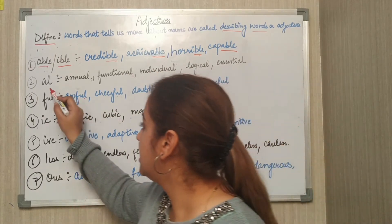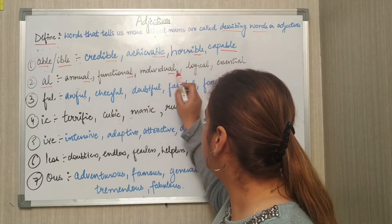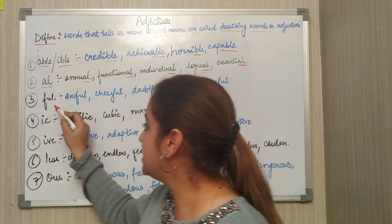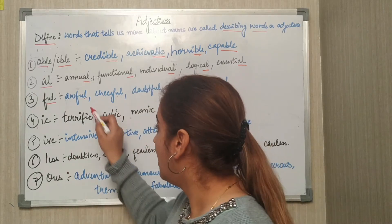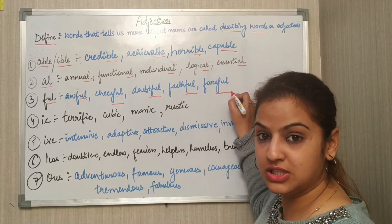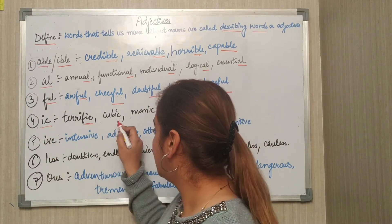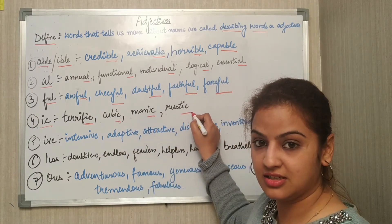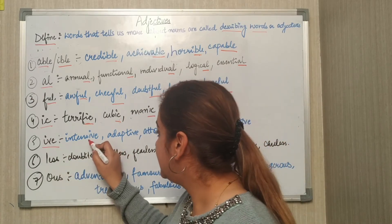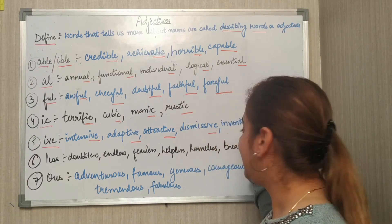Next ending is -al: annual, functional, individual, logical, essential. Next is -ful: awful, cheerful, doubtful, faithful, forceful. Next is -ic: terrific, cubic, manic, rustic. Next is -ive: intensive, attentive, attractive, dismissive.